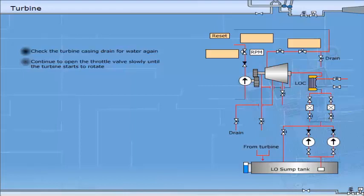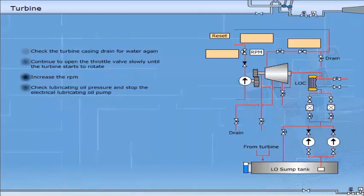Keep the turbine rotating for a few minutes. Increase the RPM until you reach idling speed or no load speed and continue to run at this RPM for another 5 minutes. Check lubricating oil pressure and stop the electrical lubricating oil pump.